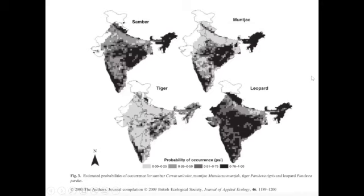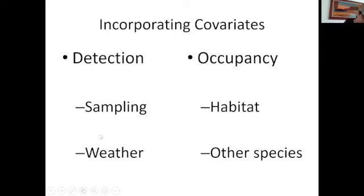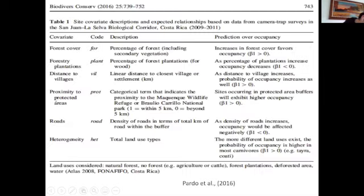We incorporate two types of covariates: detection covariates (p) and occupancy covariates (ψ). Detection is influenced by sampling conditions — for instance, deer may be less active in heavy rain, lowering detection probability in wet or very hot conditions. Occupancy covariates drive the species' occurrence in space. Detection can vary over time or space, but occupancy varies only over space in the single-season model.